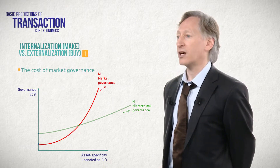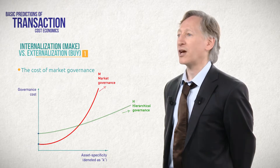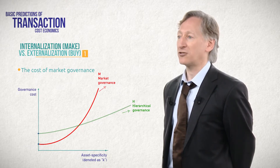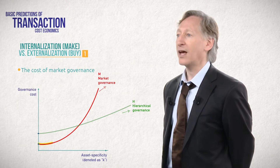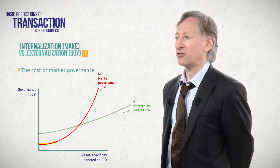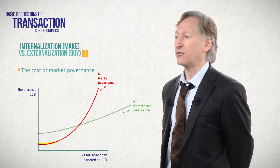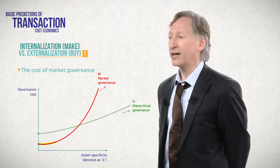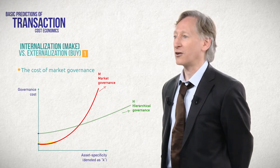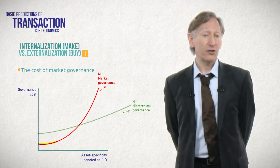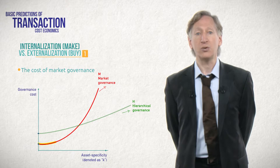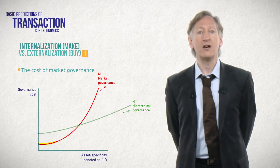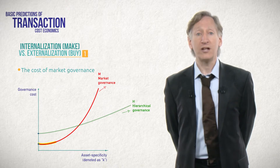First, drawing on basic economic theory, a market is the optimal governance form for transactions that are low in asset specificity. At the limit, spot market transactions have almost no upfront costs — for example, we don't have to spend time and effort writing a contract. And markets provide high incentives to each party to work hard to maximize profit. As long as I will not become dependent on you and thus vulnerable to hold-up, the market enables us to transact efficiently. And if we have a disagreement, it's almost costless to find another actor with whom to transact.